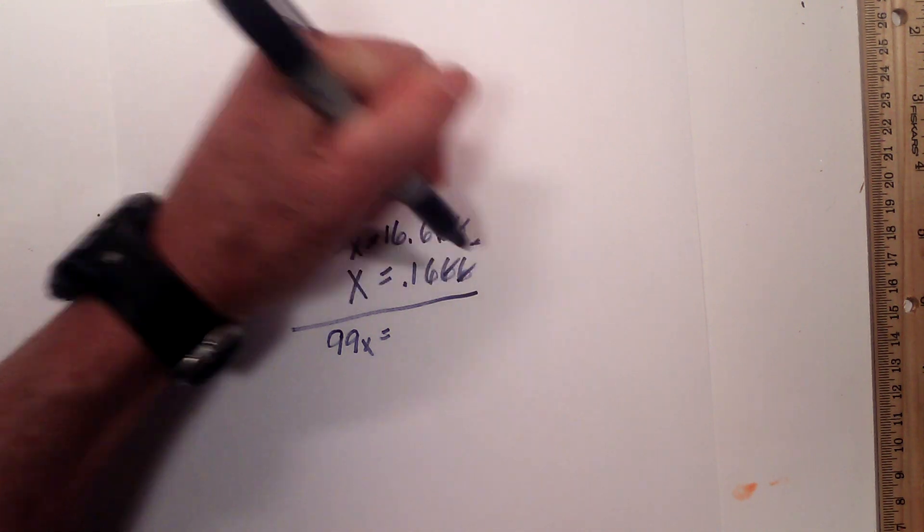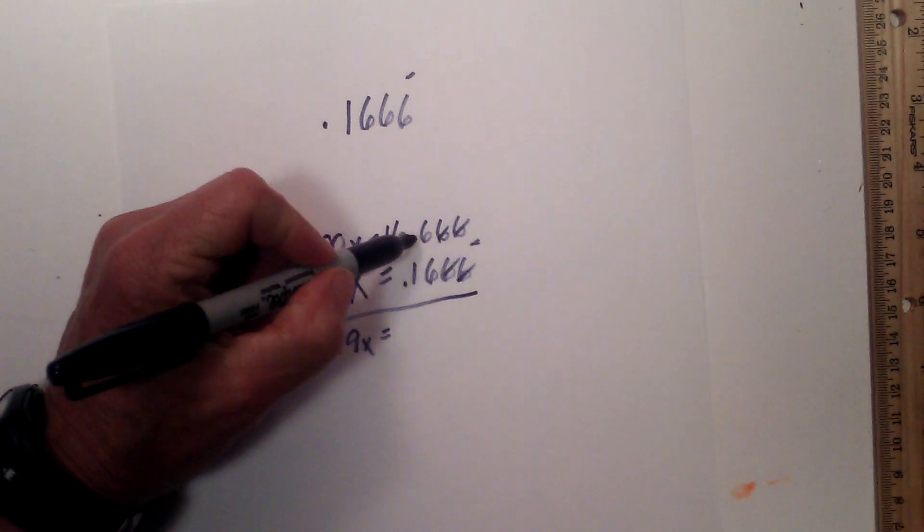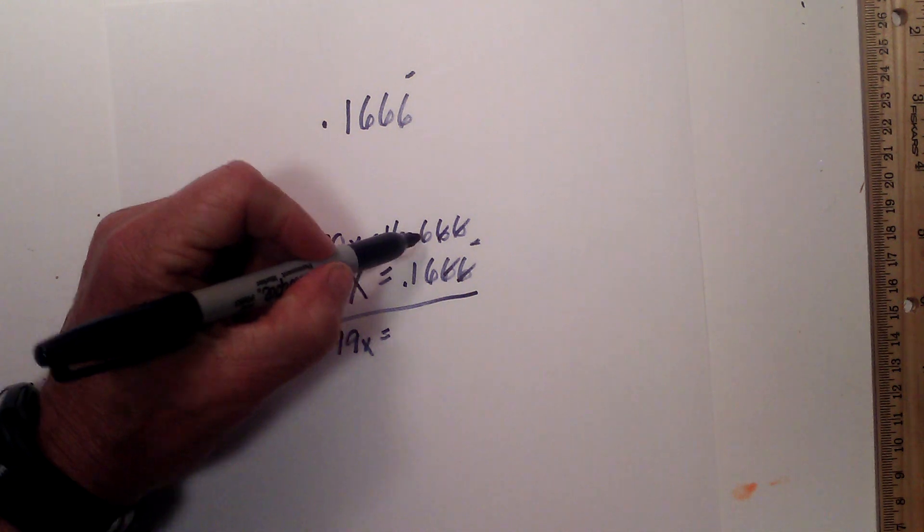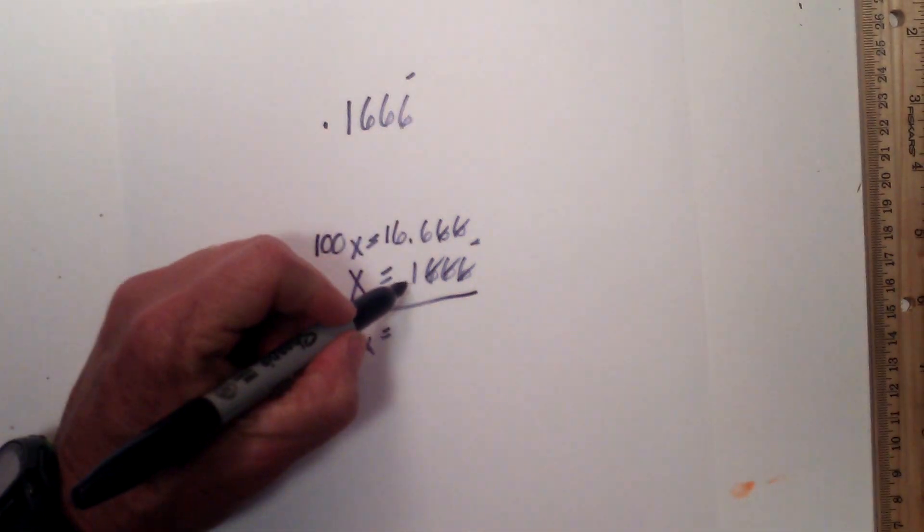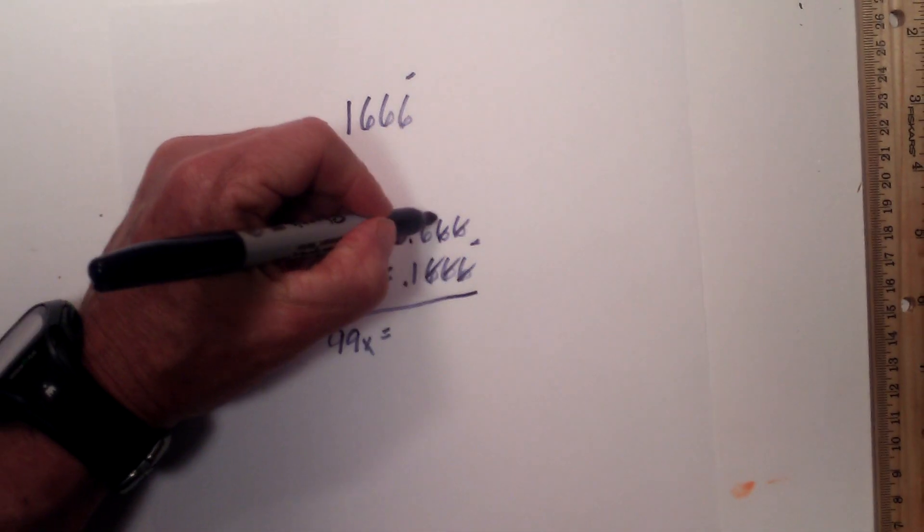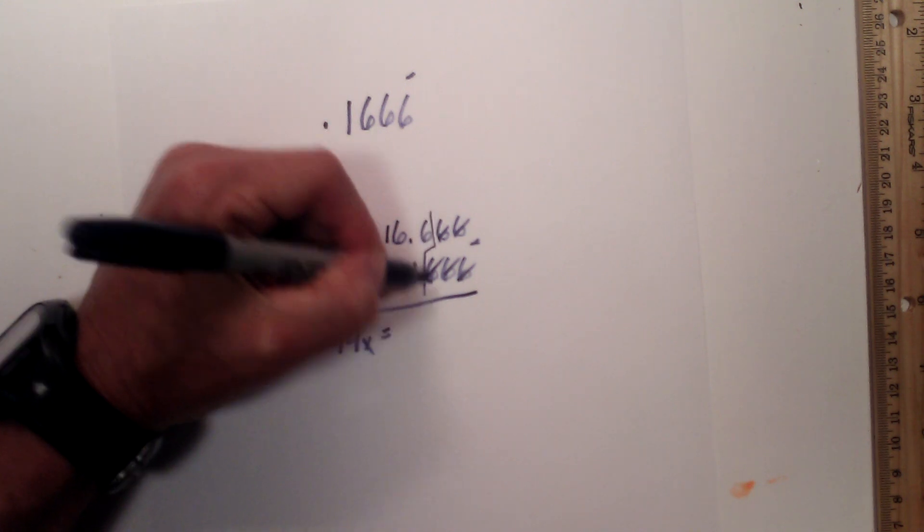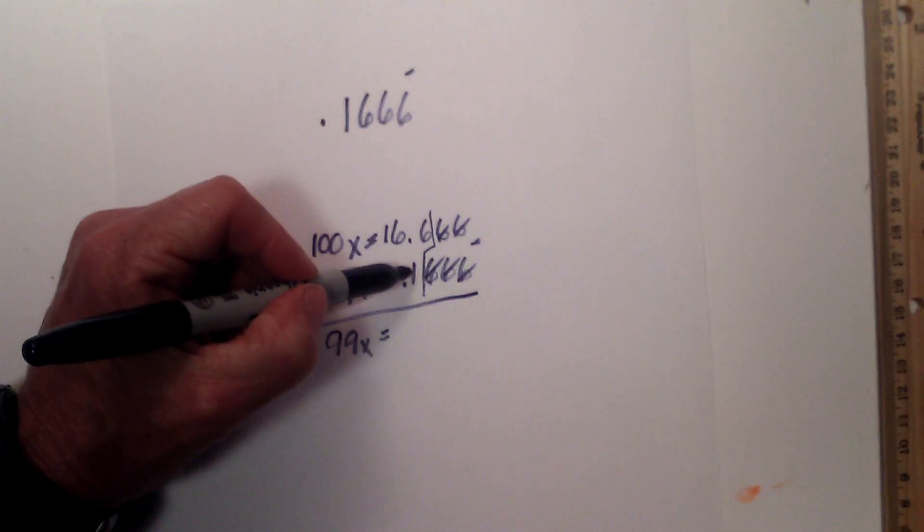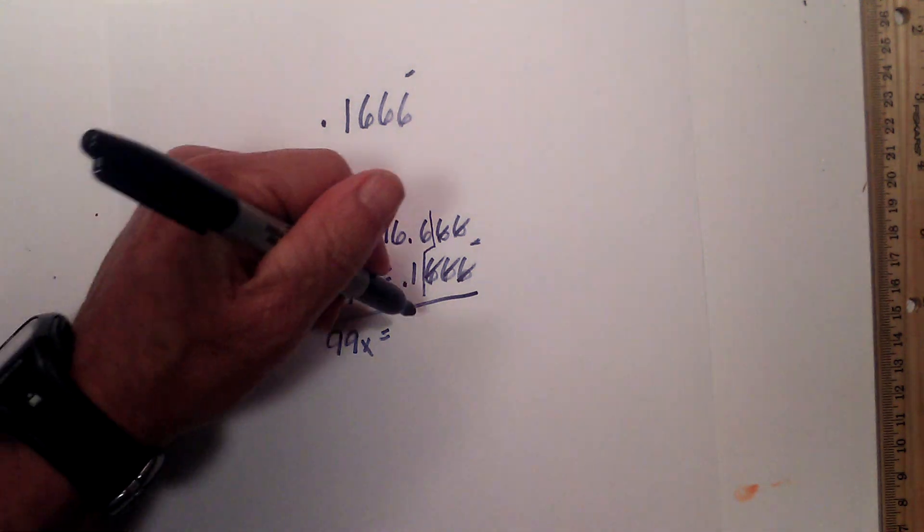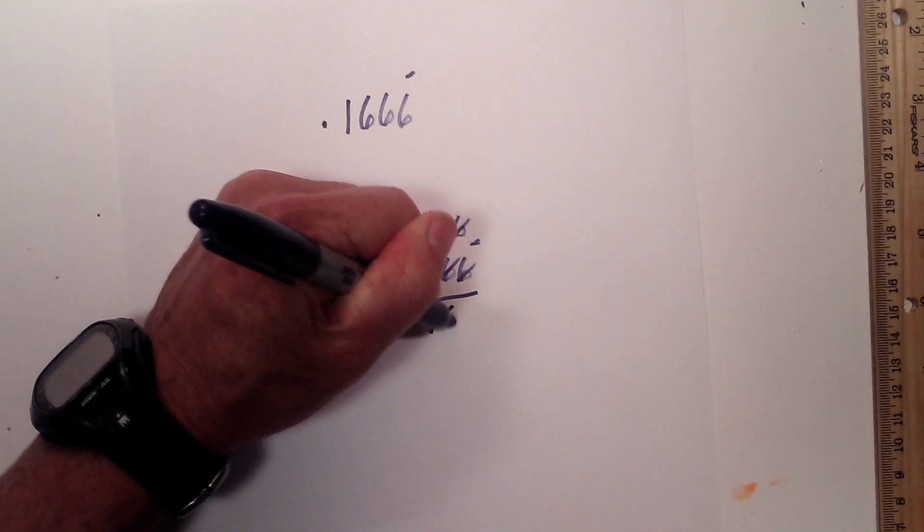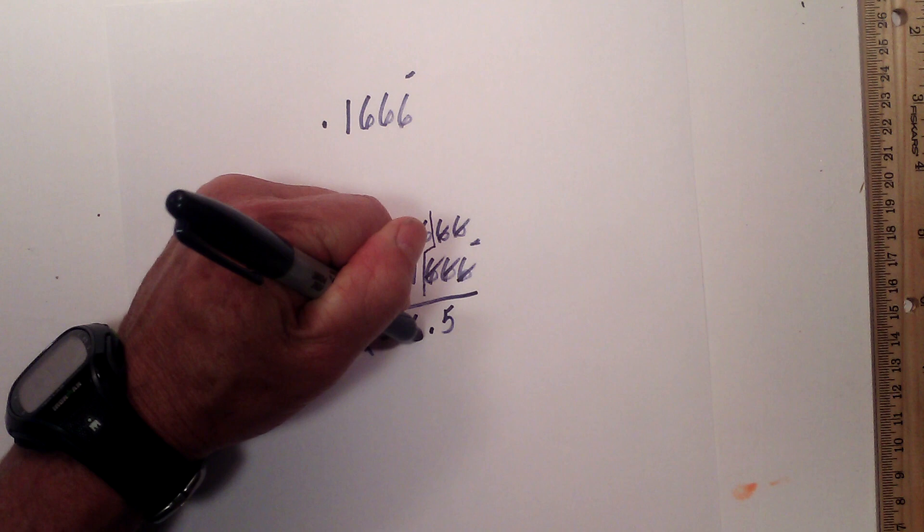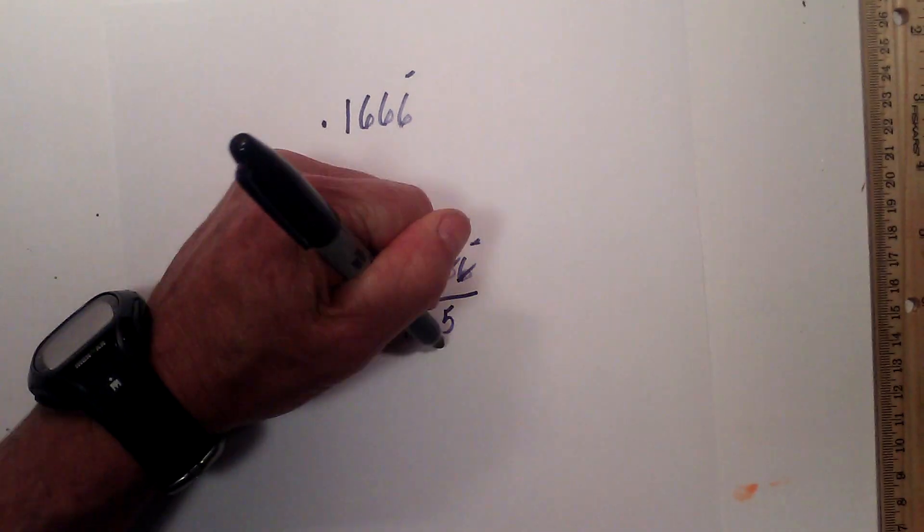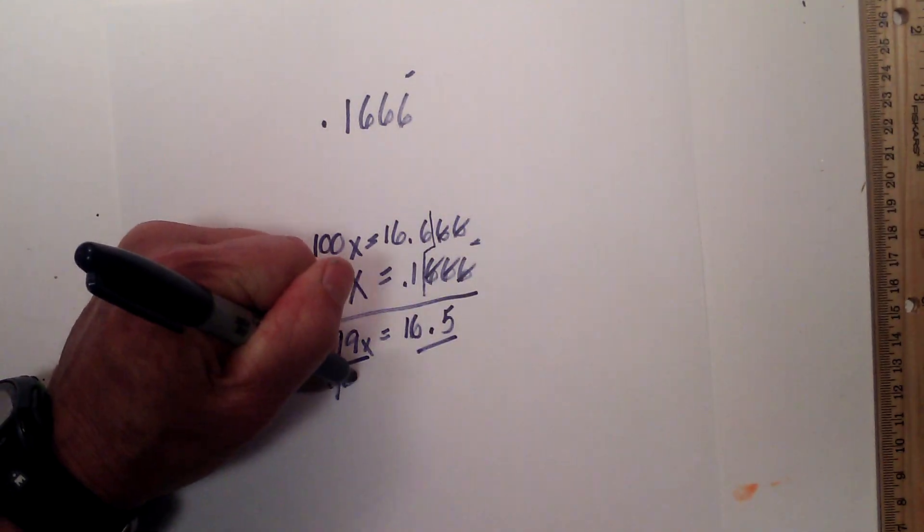However, I did not line my decimals up real good. These cancel, but we still have 0.1. So I am going to draw a little line like this. It is a little messy. So now we have 0.6 minus 0.1. So that becomes 0.5. And bring down the 16. Now divide by 99.